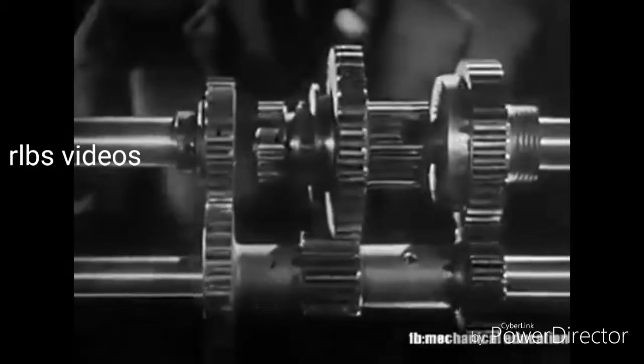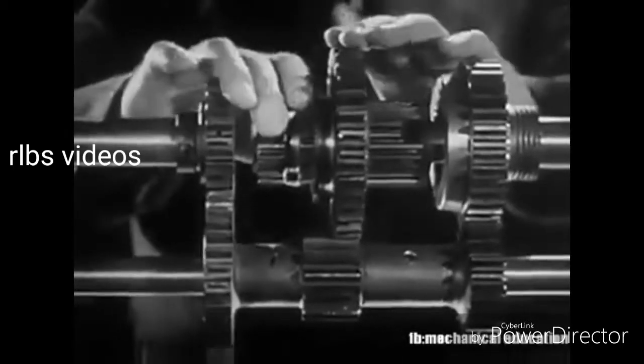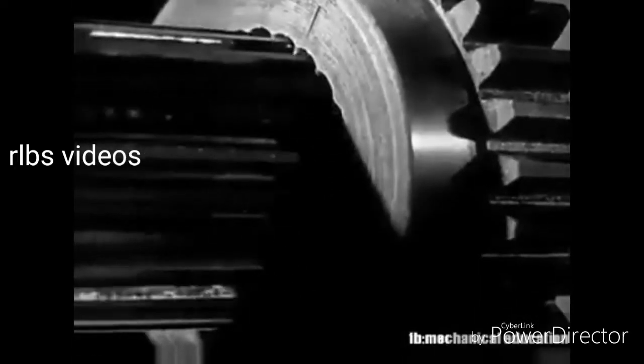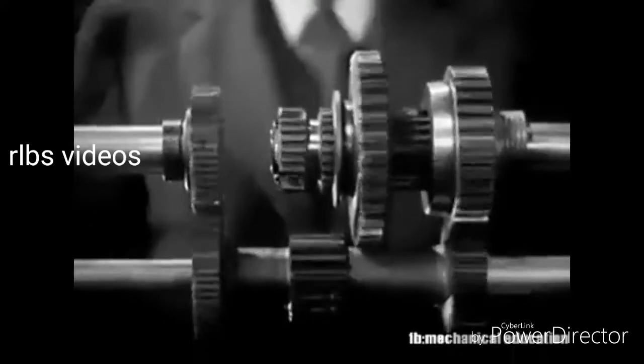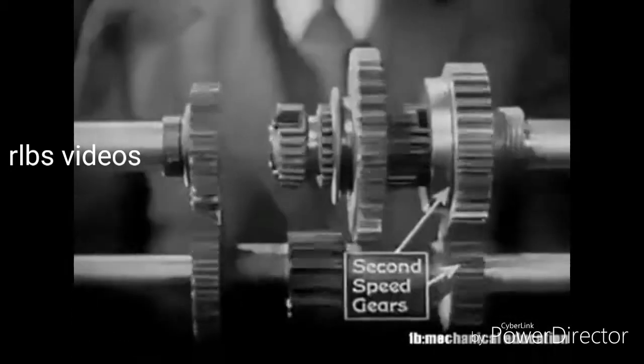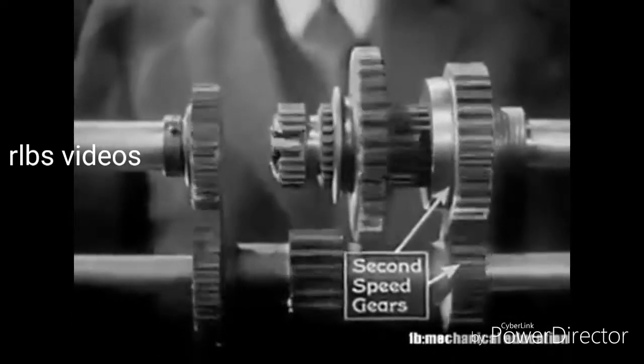After we've started the car rolling, we want fast pickup. So, we shift into second by sliding the sleeve backward to mesh with this gear on the shaft to the rear wheels. The wheel is now turning at 60 revolutions a minute, and the power flows through these gears.